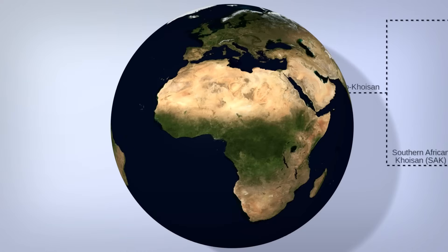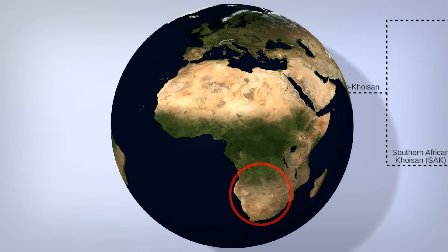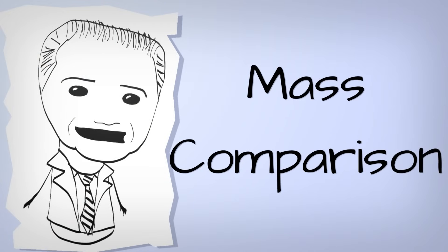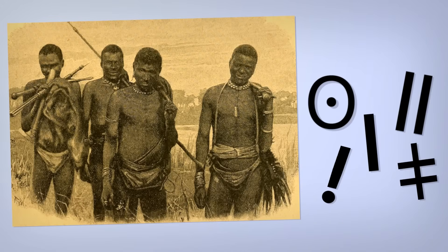One last one before we go. Time for the oddest speech sounds out there. Making their home in the southwest of Africa are the Khoisan languages. This isn't a single family, even though mass comparison struck again. It's a cluster of families, renowned for possessing entire sets of sounds, called clicks.